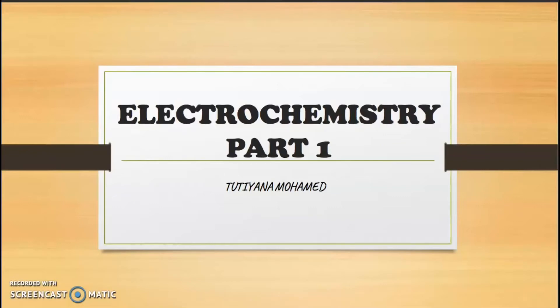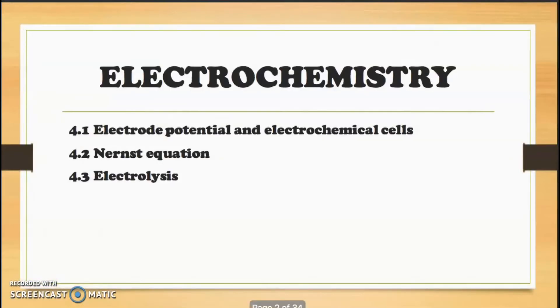Chapter 4: Electrochemistry. The subtopics in Electrochemistry are Electropotential and Electrochemical Cells, Nernst's Equation and Electrolysis.